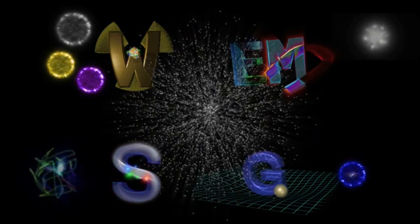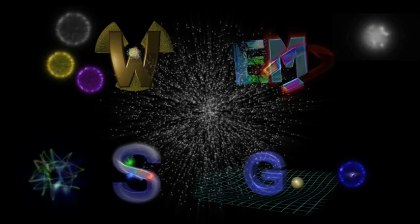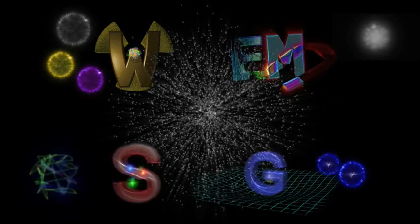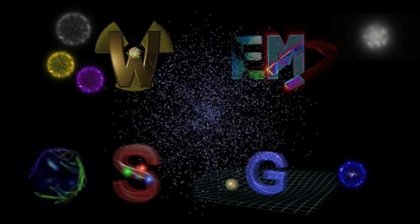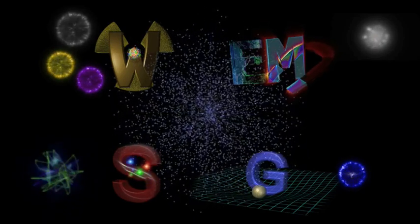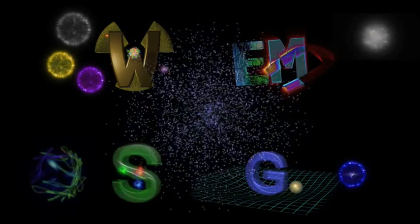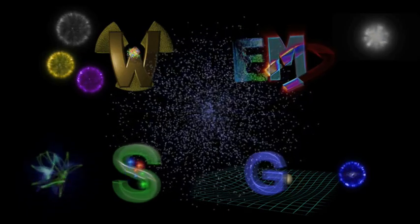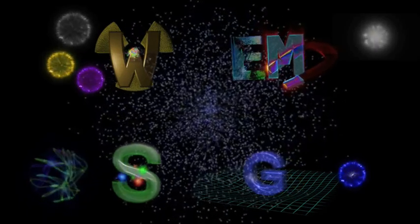The photon is a gauge boson for the electromagnetic force, and the graviton is the gauge particle for gravity. Both of these particles are massless, and so the range of these two forces is unlimited.